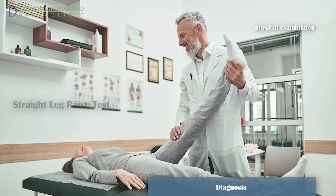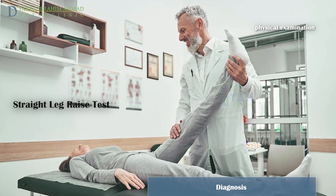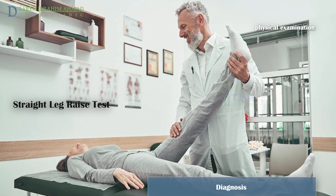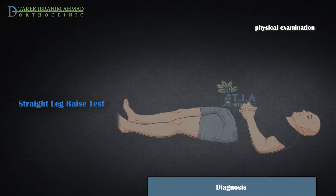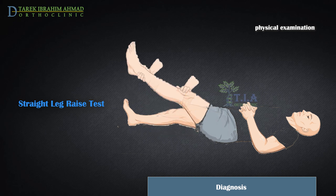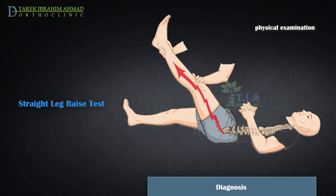The Straight Leg Raise Test is a specialized test to predict if a disc herniation is present, especially in younger patients. During the test, you lie on your back and your doctor carefully lifts your affected leg — with your knee staying straight — to see if it aggravates your symptoms. If you feel pain down your leg and below the knee, it is a strong indication that you have a herniated disc.